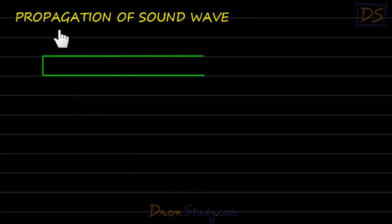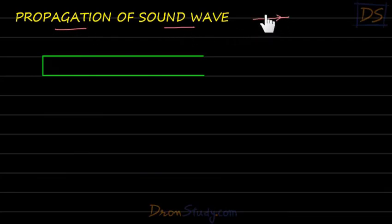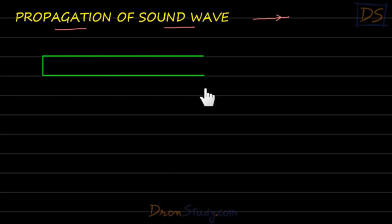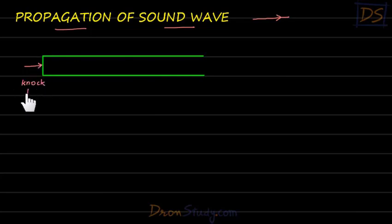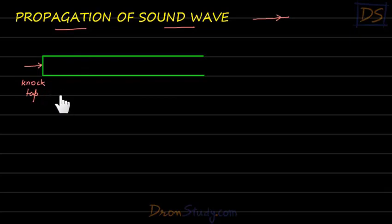Now let's see the propagation of sound — how a sound wave travels from one place to another. Consider a tube that is fixed and cannot move. If you knock on the tube with your finger and tap it, a sound is produced. That sound reaches your ear. Let's understand how that happens.